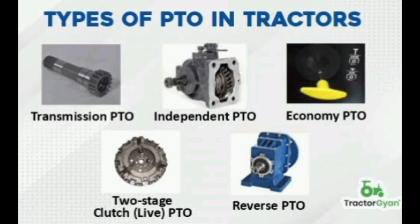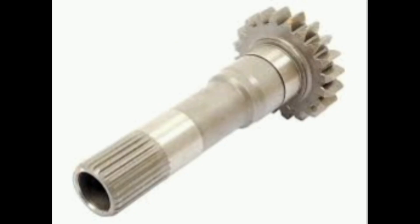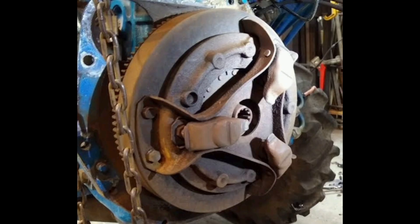The transmission PTO shaft is the oldest and simplest PTO shaft type. This type of PTO directly connects to the transmission. When you engage the PTO on a tractor and press the clutch, you cannot drive the PTO — meaning the PTO stops when the clutch is pressed.